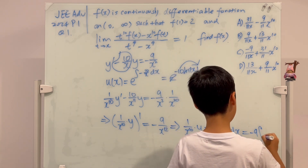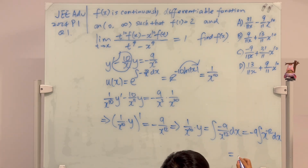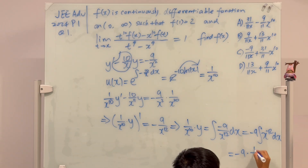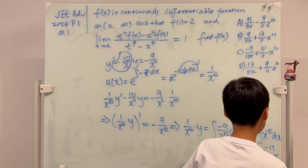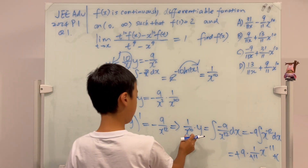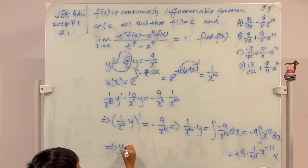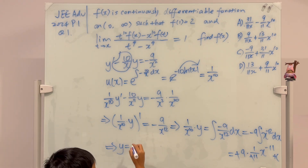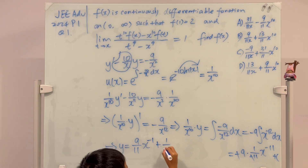Integrating both sides: (1/x^10)·y = ∫−9x^{−12} dx = −9 · (1/(−11)) · x^{−11} = (9/11) · x^{−11} + C. Multiplying both sides by x^10: y = (9/11)·x^{−1} + C·x^10.